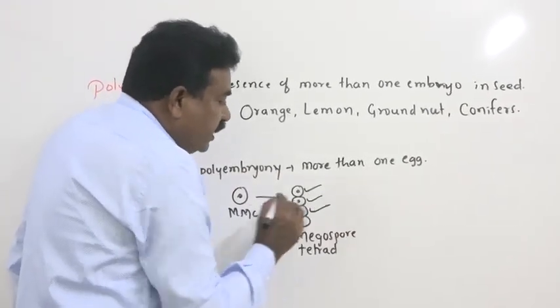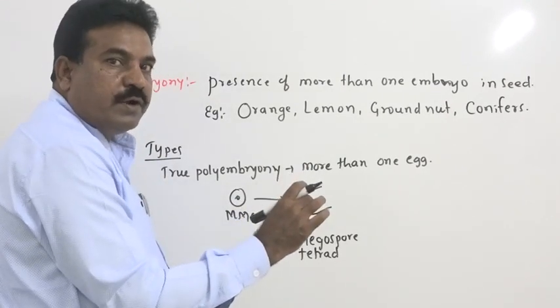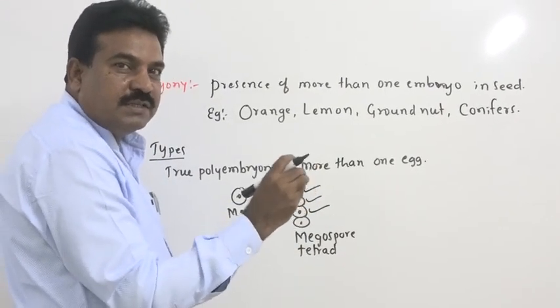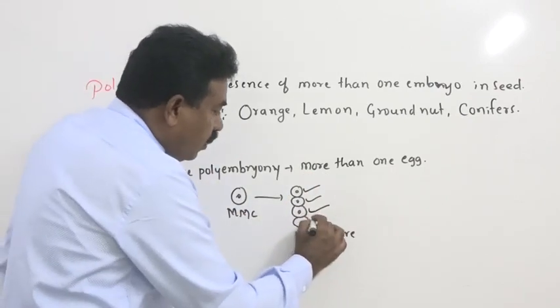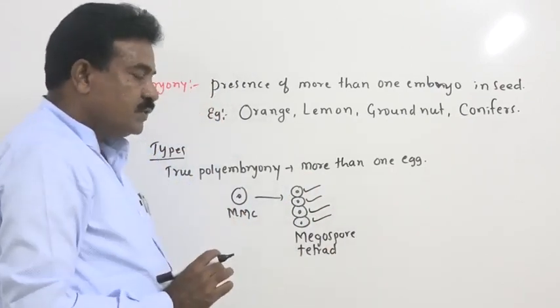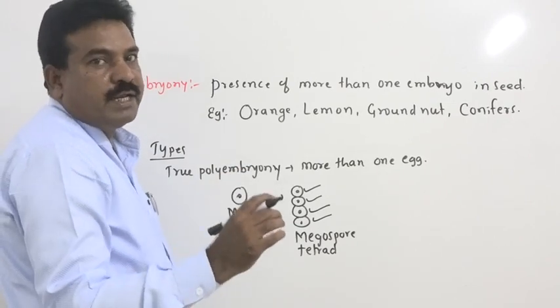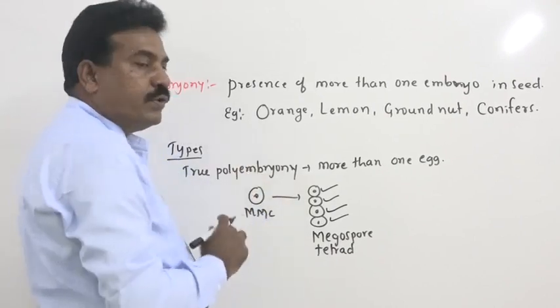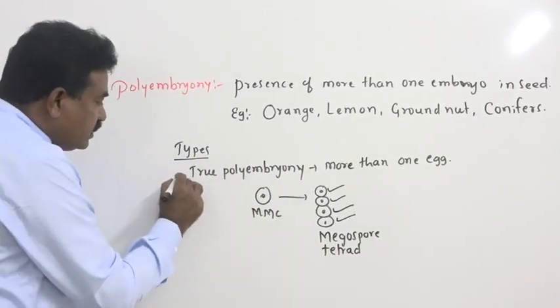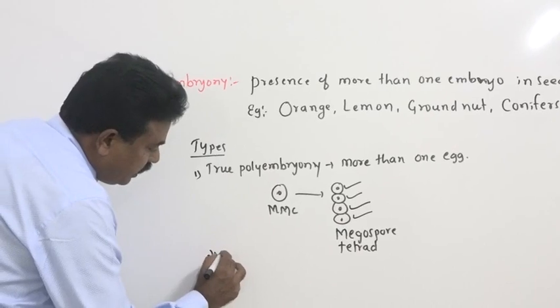If three megaspores develop into three female gametophyte, we get three eggs, three embryos. That results into true egg. If all four megaspores develop into female gametophyte, we get four eggs, that results into true polyembryony. Then, second one, mixed polyembryony.